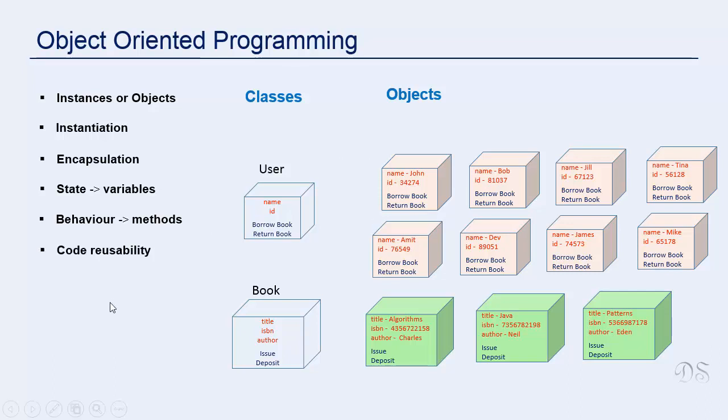One of the advantages of object oriented programming is code reusability. Classes that you define can be used by different applications. Then you can inherit from these classes to make new classes. This reduces development time and effort.